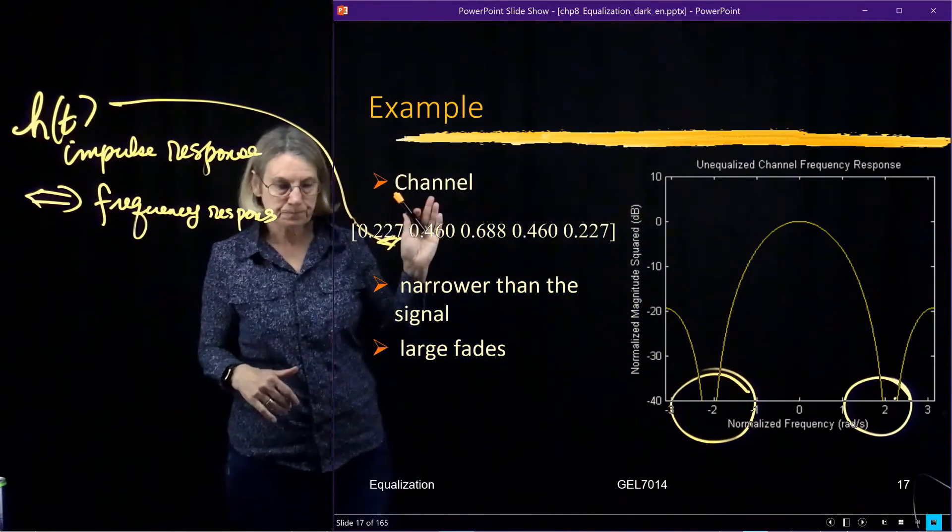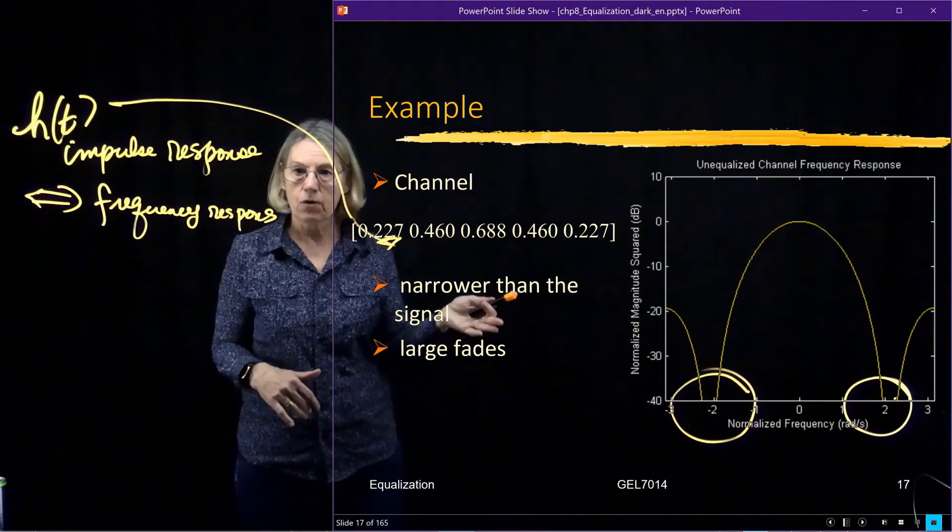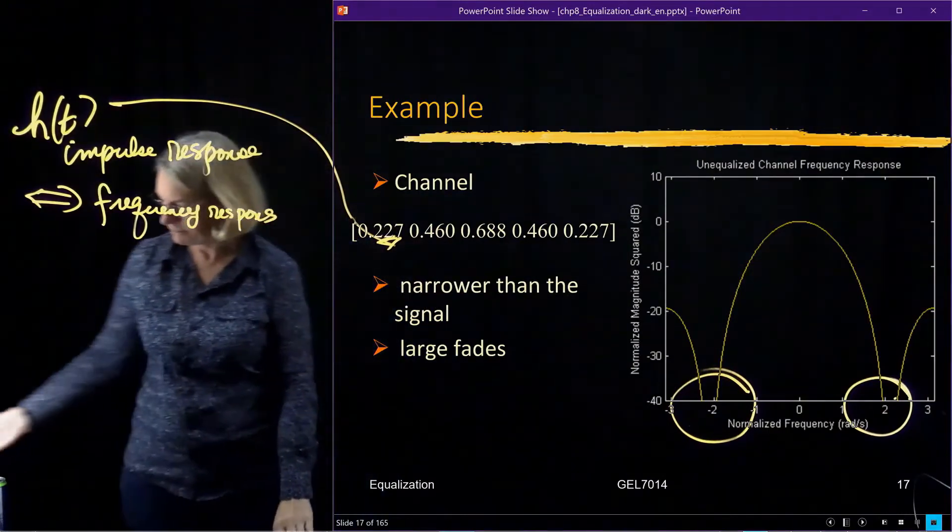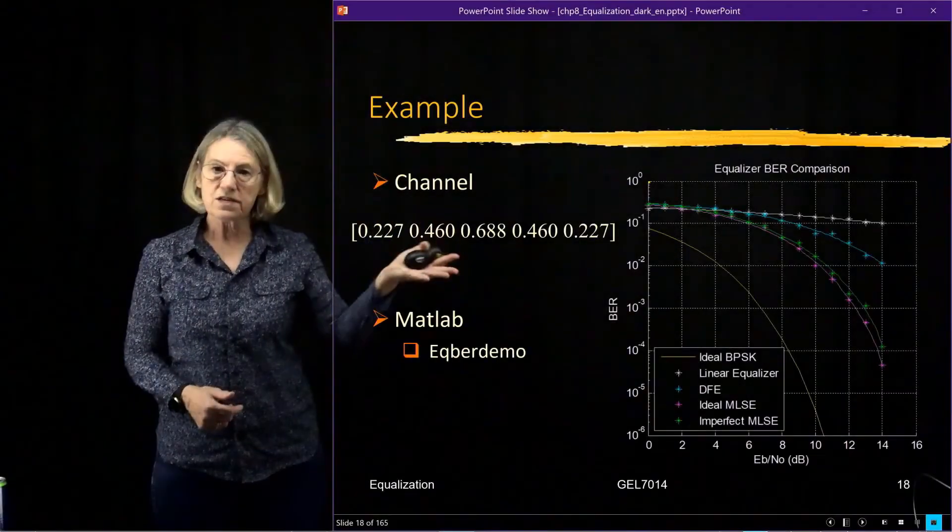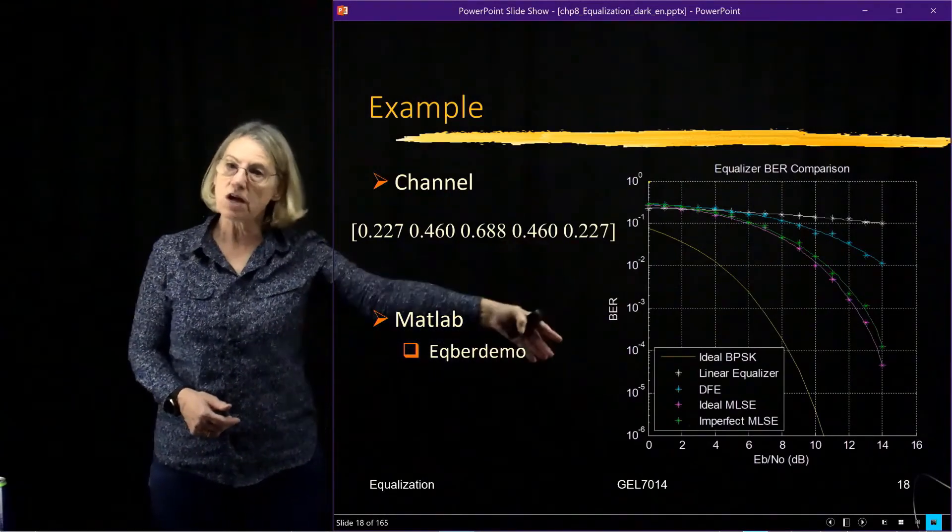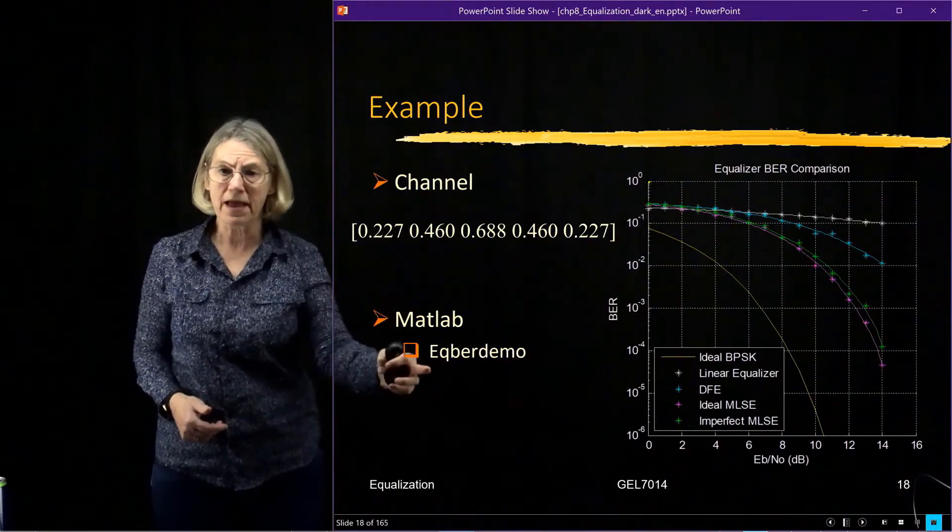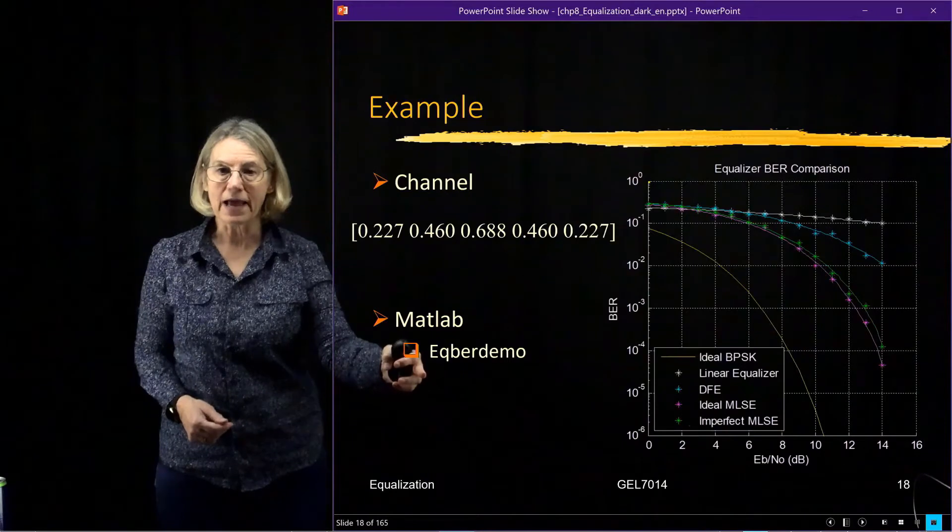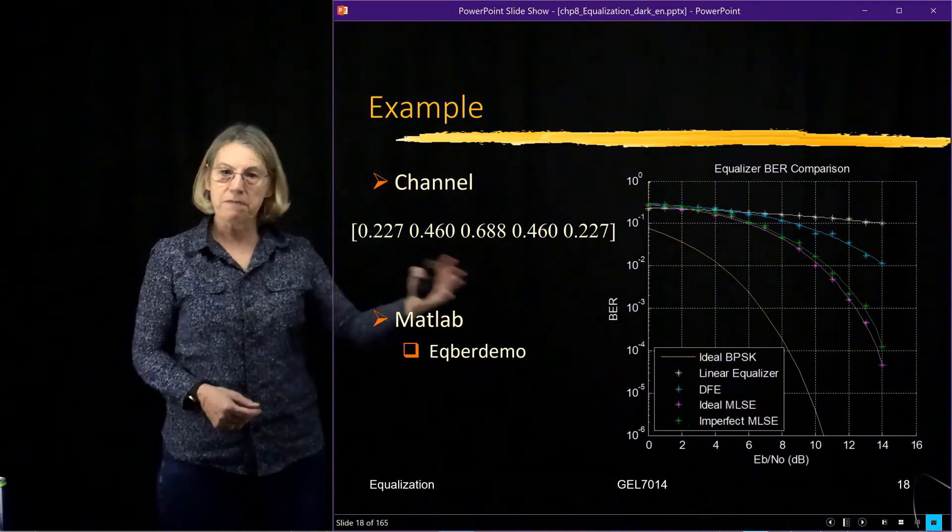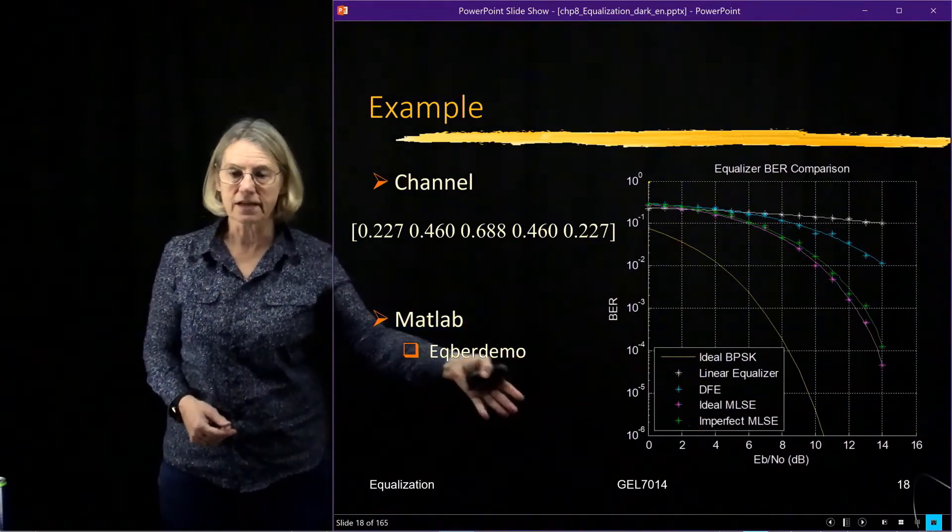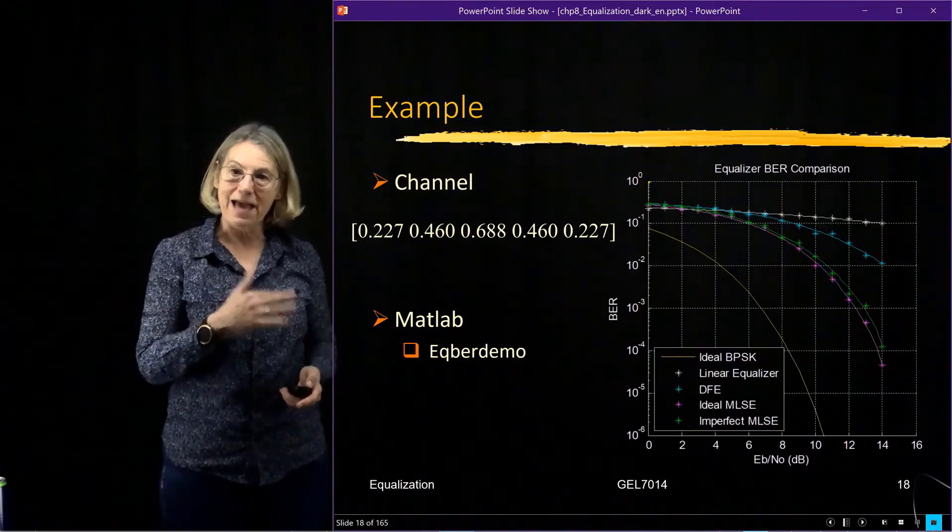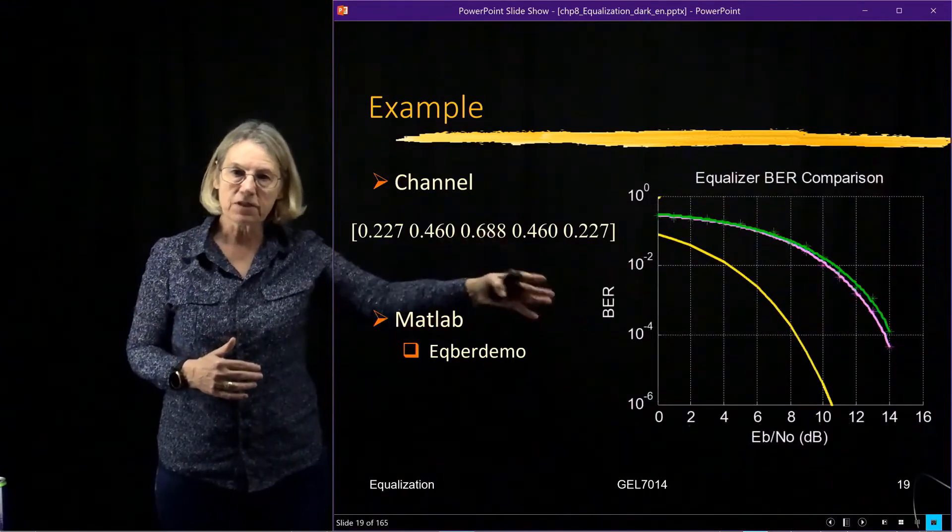So this channel, we're going to run through MATLAB, and we'll see what kind of performance we get for this channel. So this is the performance of this channel. Now I have bit error rate versus Eb over N0. And these results were generated in MATLAB. In fact, it uses a nice command, a nice demonstration routine in MATLAB called EQBERDEMO, equalizer BER demo. And it tests many different kinds of equalizers, equalizers that we'll be discussing. For now, I'll concentrate on just the results for the MLSE.